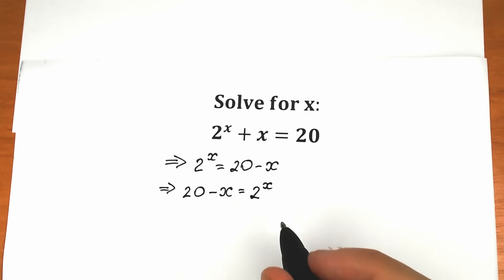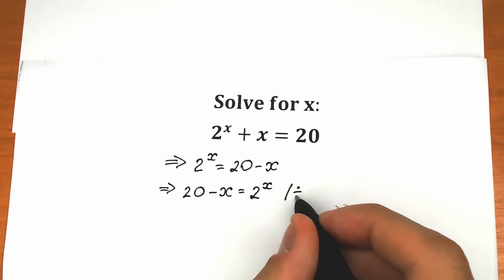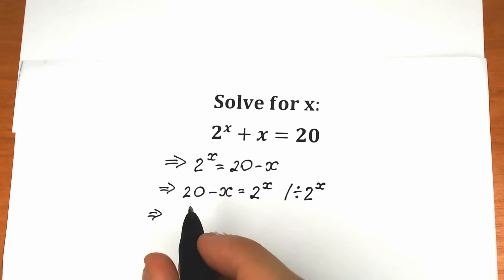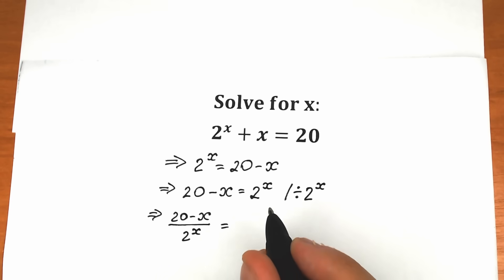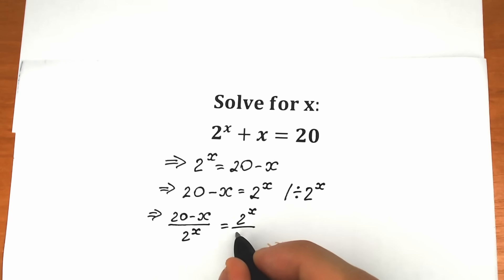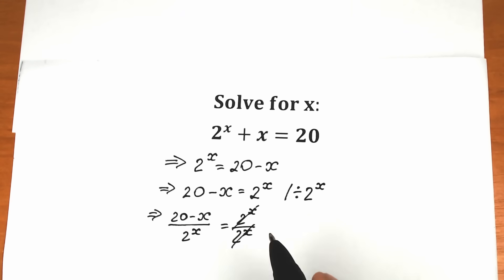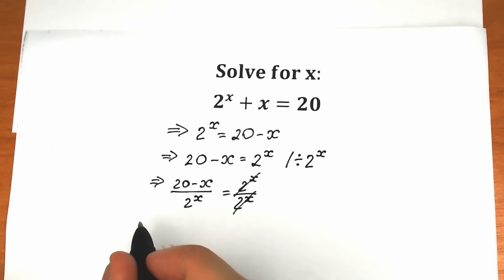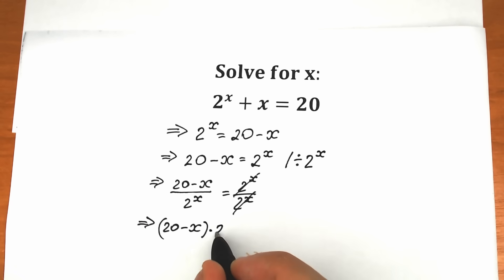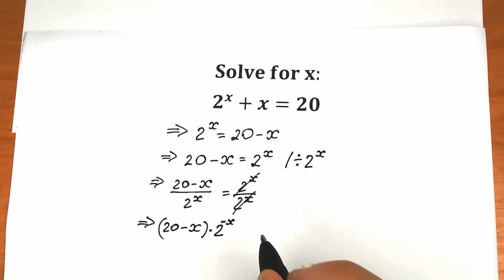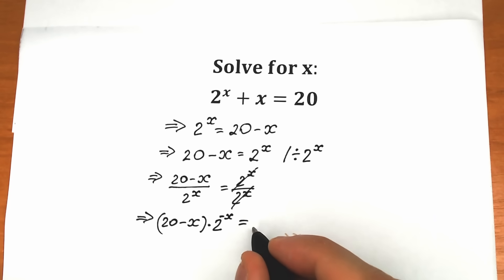Right now, let's divide both sides by 2 to the power x. So we divide both sides by 2 to the power x. On the left side we have 20 minus x divided by 2 to the power x, and on the right side, 2 to the power x divided by 2 to the power x — we can easily cancel those. We can bring 2 to the x from the denominator to the numerator by putting a minus as the power. So as a result we have 20 minus x times 2 to the power minus x, equal to 1.